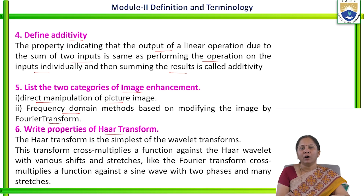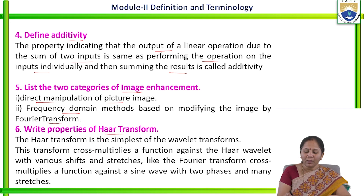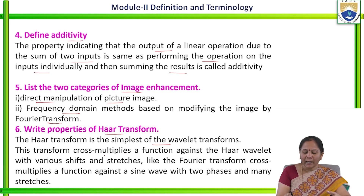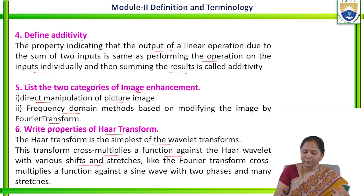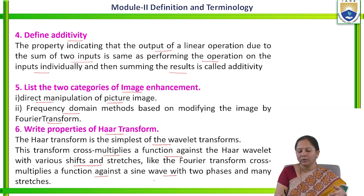Write the properties of the transform. The transform is the simplest wavelet type of transform, and its function is to cross multiply a function against the Haar wavelet with various shifts and stretches. For example, Fourier transform can cross multiply a function against a sine wave with two phases and many stretches.